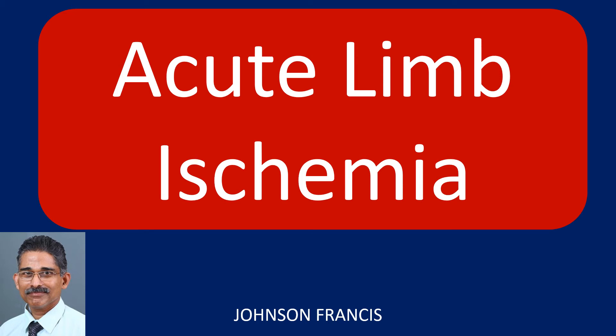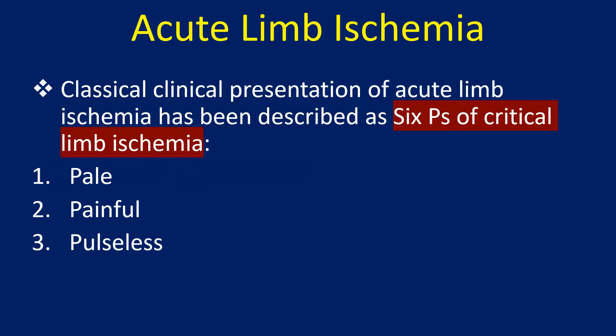The classical clinical presentation of acute limb ischemia has been described as the 6 P's of critical limb ischemia.